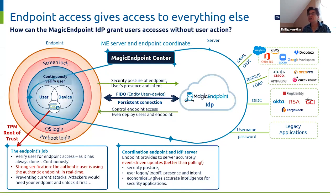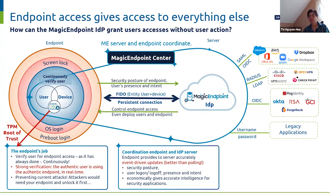With this persistent connection, the server can continuously verify — in real time — the intelligence about the endpoint and the user, and can even control the access of the endpoint, not just controlling access of the application. In case the user informs the server that the endpoint has been stolen, the server could tell the endpoint to lock the current attacker out, or even tell the endpoint to report its location so that authorities can go and catch the thief.